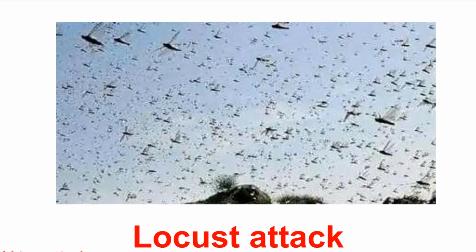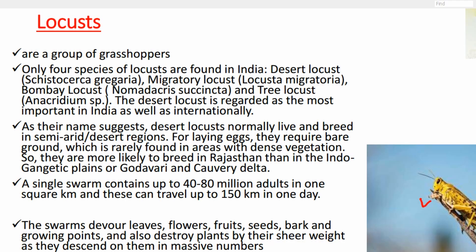Our next topic is the locust attack in India. A locust is a class of grasshopper — small insects that depend on grass for feeding. In India, four species of locust are present: desert locust, migratory locust, Bombay locust, and tree locust. The desert locust is regarded as the most important both in India and internationally, and is causing the most damage.